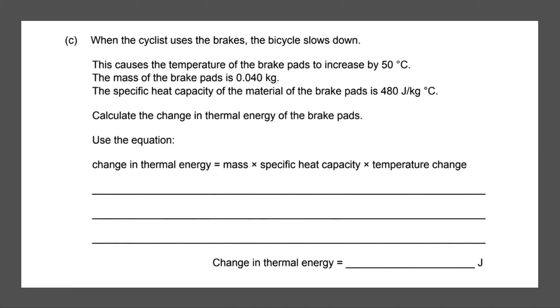And we're given the equation, so the mass we're given is 0.04, which is in kilograms, 0.04 multiplied by the specific heat capacity over here, 480 joules per kg, and then we're given the temperature change as well which is 50 degrees. Now we have our full equation, we can type that into the calculator.